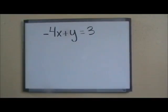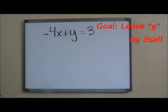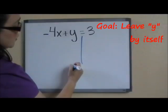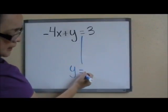The equation that I have now is negative 4x plus y equals 3. Our goal, again, is to leave the variable y by itself, so our new equation reads y equals.